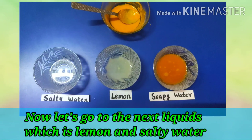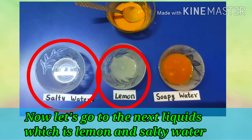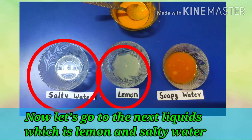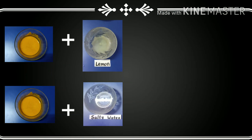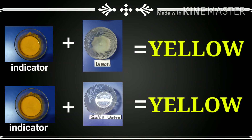Now let's go to the next liquids — lemon and salty water. When we add turmeric indicator to both liquids, the color becomes yellow. This is a problem because both the acidic and neutral liquids turn yellow. So how can we differentiate between an acidic liquid and a neutral liquid?